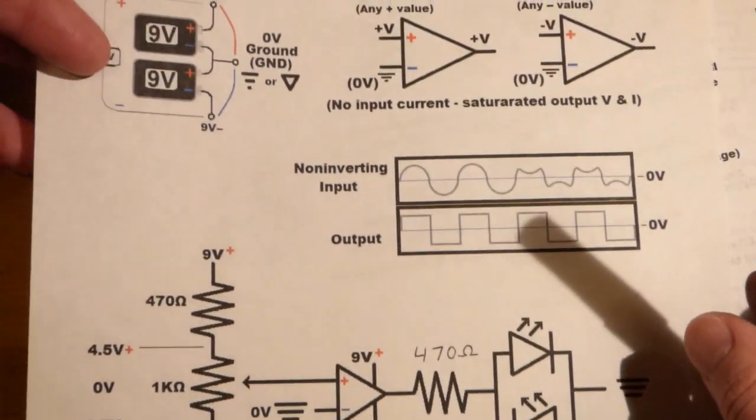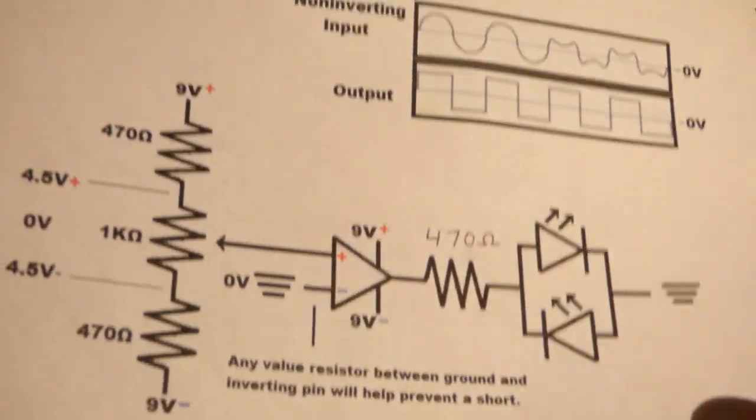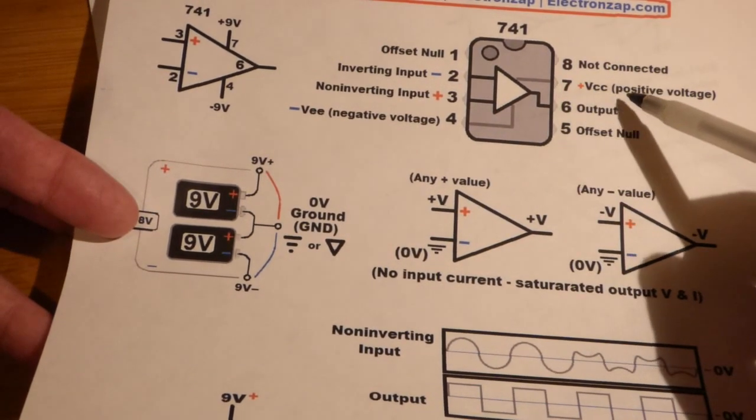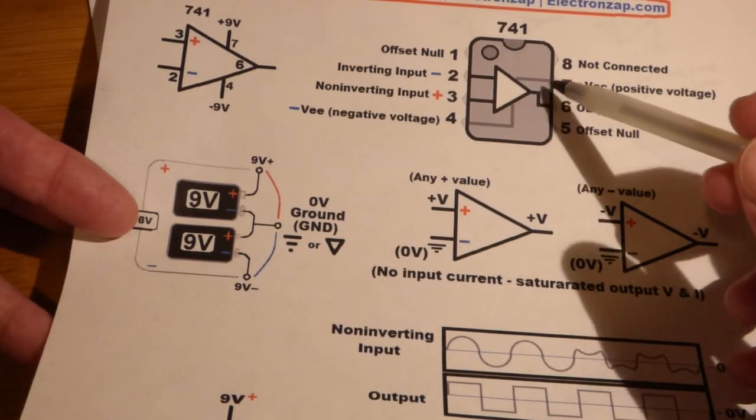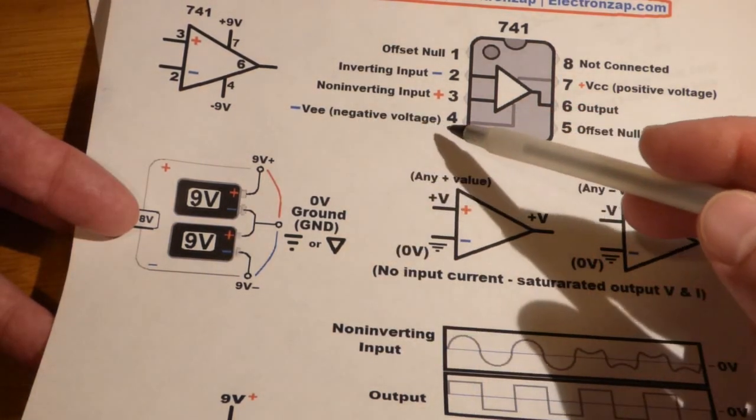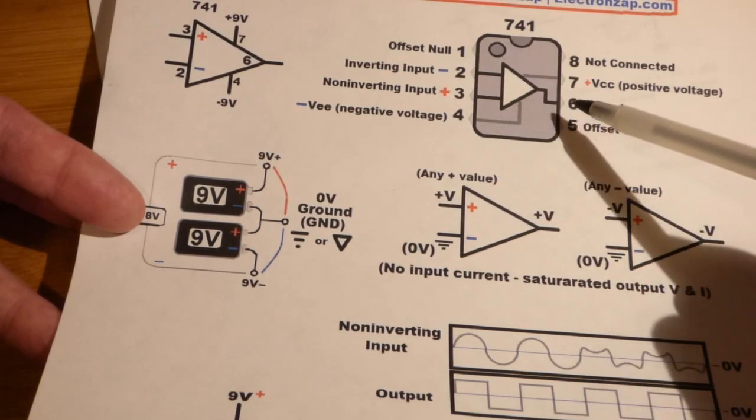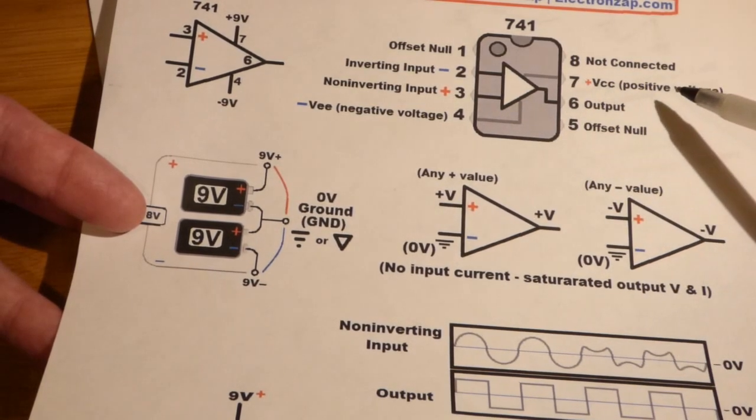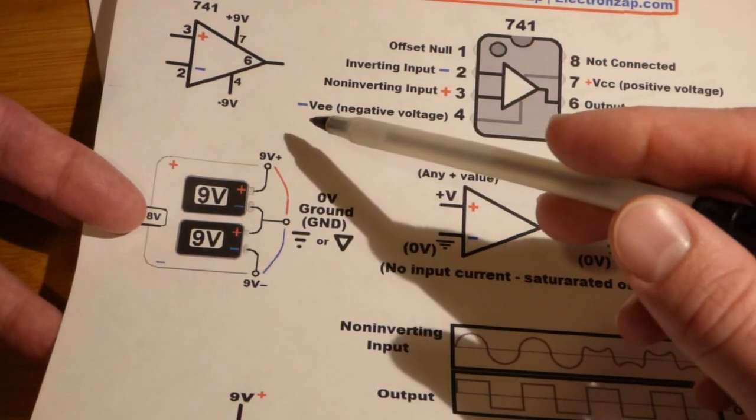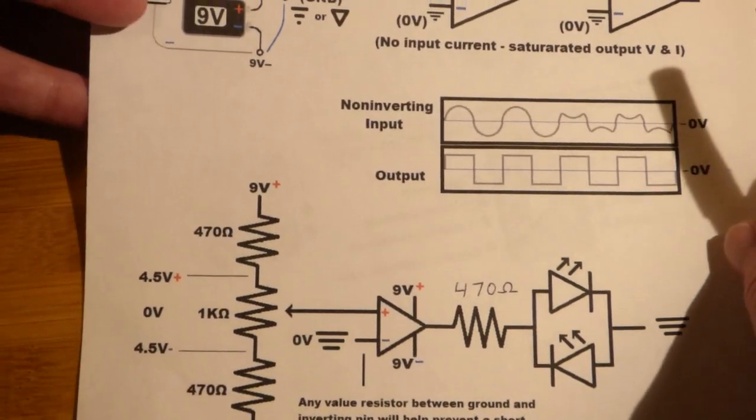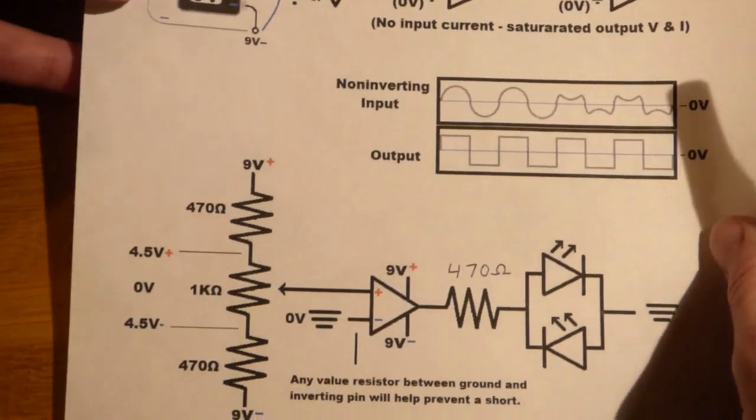We can look at the pin layouts here. The positive voltage side goes to pin 7, the negative voltage side goes to pin 4. That's negative in relationship to ground. We're going to have almost 9 volts above ground and then almost 9 volts below ground for a total of almost 18 volts in that range.